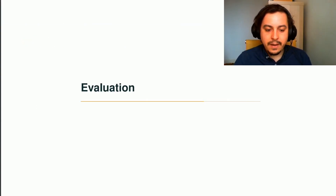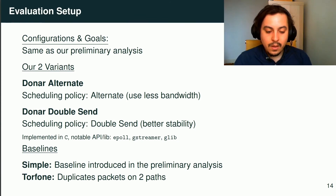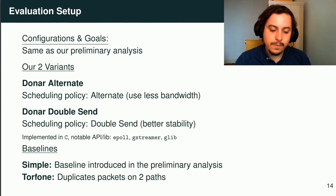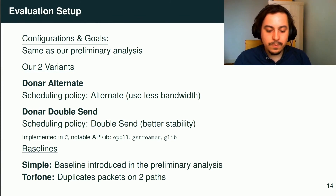Now that we have defined Dona, we want to evaluate it, keeping the same requirements and methodology as our preliminary analysis. The single-path approach evaluated earlier is now one of our baselines, referred to as 'Simple.' We also evaluate a two-link naive multipath approach implemented in the software named Torphone as our second baseline. Finally, we evaluate our contribution in two variants — Dona Alternate and Dona DoubleSend — according to their scheduling policy.